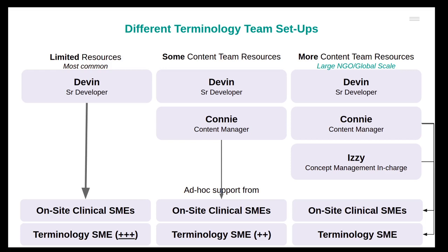From all the user interviews and persona creation, we found three different types of terminology team setups among our implementers — ranging from limited to some to more content team resources. Among them, limited team resource is the most common. But all of them had one thing in common: they lack in-house terminology experts, so they need to reach out to other organizations or teams like the CIL team to finalize their concepts.